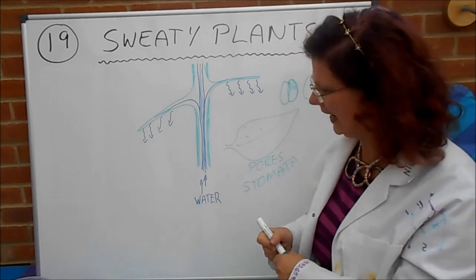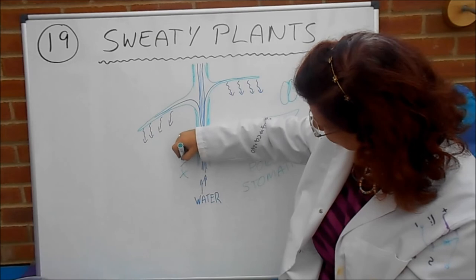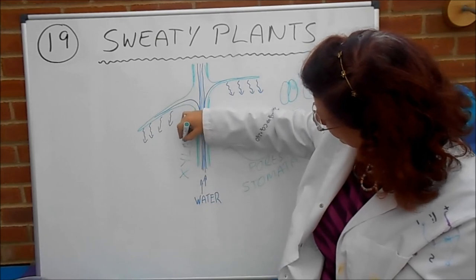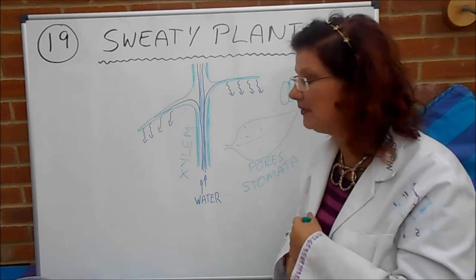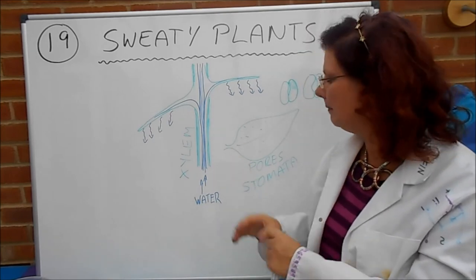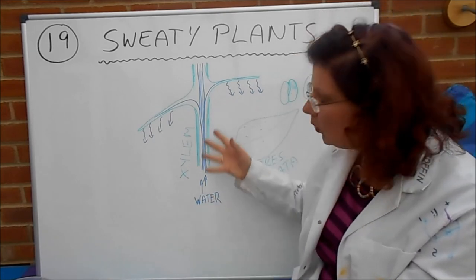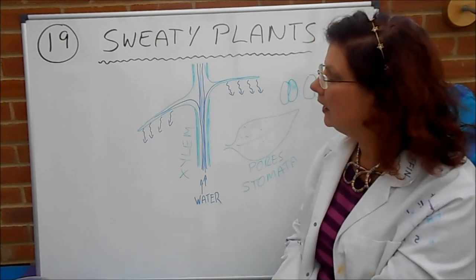So they've got these little tubes that come up that contain water, which have the wonderful name Xylem. That's a really good name. It starts with an X. Xylem. And they're the tubes that the water flows up, and they go all the way down to the roots.